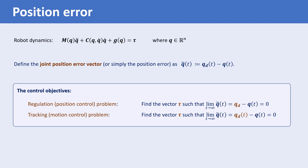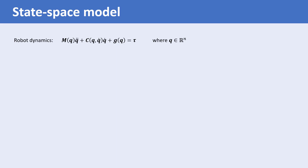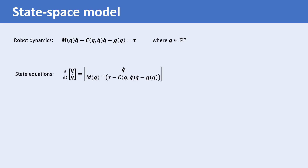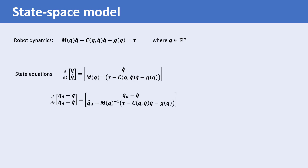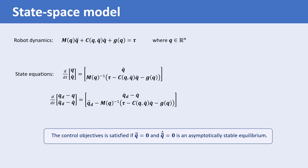For an n degree of freedom robot manipulator, the dynamical model is in this form where the vector Q is an n-dimensional vector. The state equations of the system can be written in this form. Note that the matrix M is positive definite and therefore invertible. This system has 2n state variables. These equations can also be written in terms of the state vectors Q-tilde and Q-tilde-dot. The control objective is achieved if the origin of the closed-loop system is asymptotically stable, meaning Q-tilde and Q-tilde-dot equals zero is an asymptotically stable equilibrium.